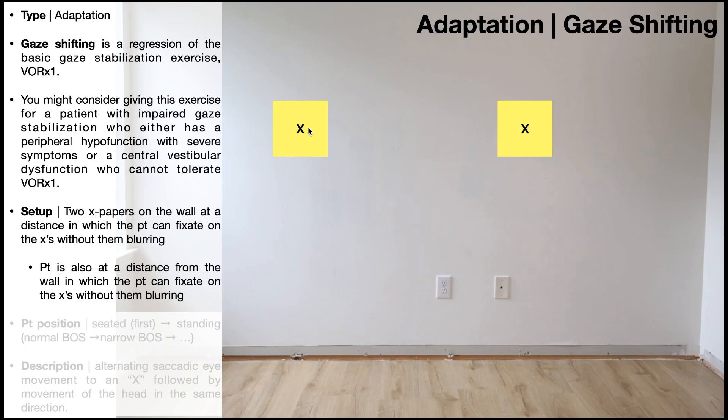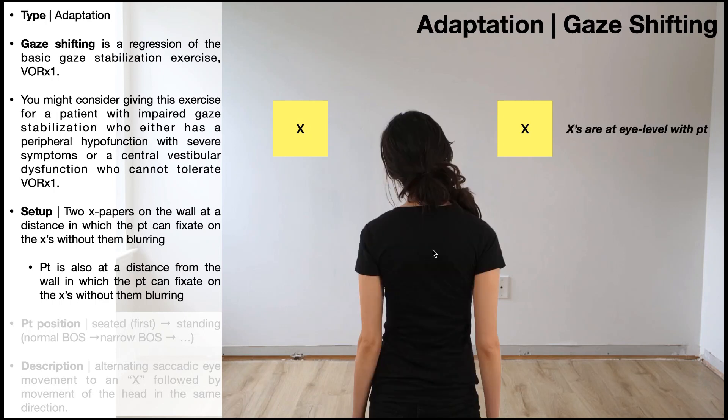As we'll see in a few minutes, if the X papers are further apart, then the patient would be required to fixate on each X through a larger ocular range of motion, because the eyes would have to move further between the X papers. If the X papers are closer together, that makes it easier, because the patient would be able to fixate through a smaller ocular range of motion. Then the patient's going to stand at a distance from the wall in which the patient can fixate on each X without the X's blurring.